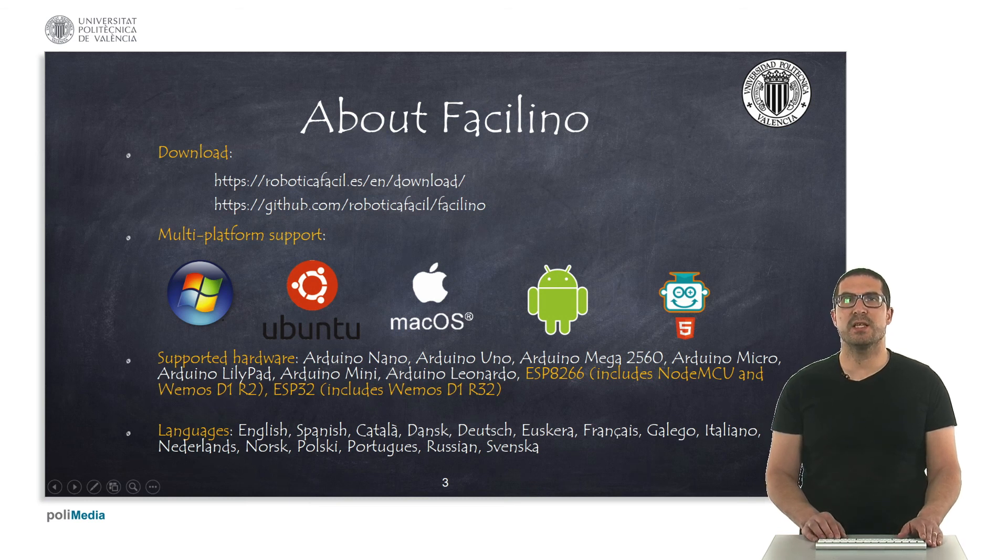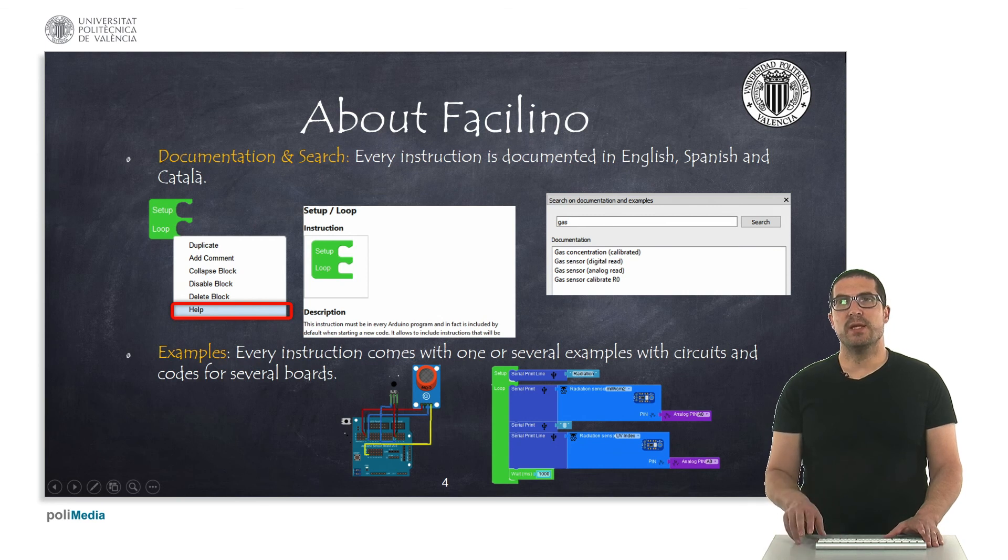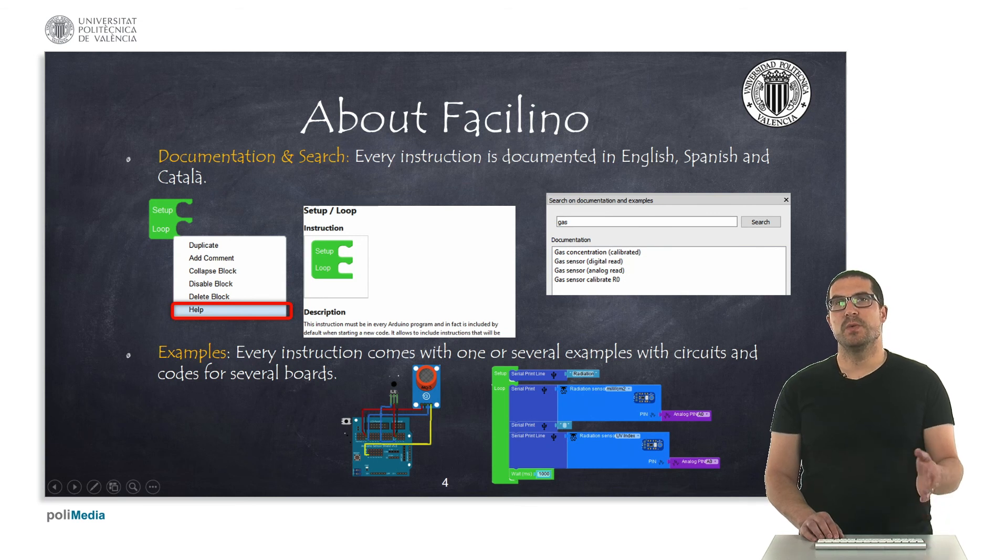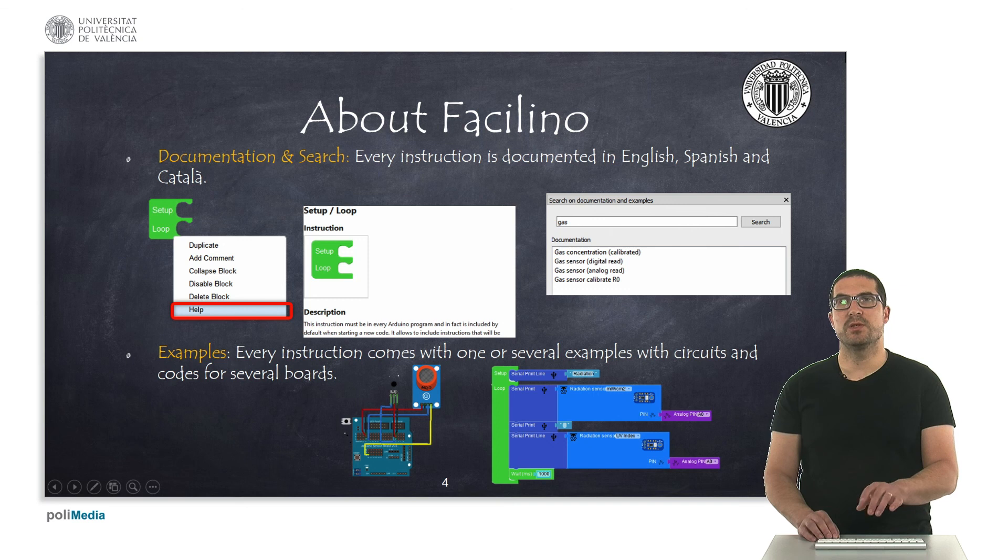It's been translated into multiple languages, as you can see here. There's a documentation and search tool. If you right-click on every instruction, there will be this menu and you can click on help and you will see the help for that instruction, which usually includes a description and detailed information about the inputs and how to use it. You can also search for specific instructions using the search utility by introducing keywords, and they will list some of the found examples and instructions.